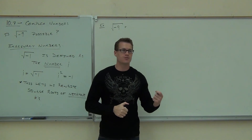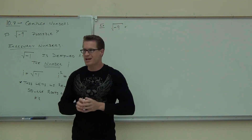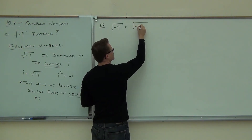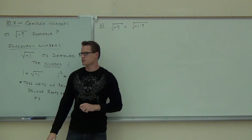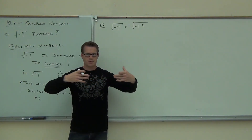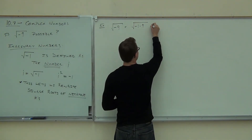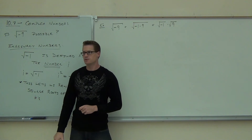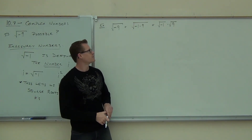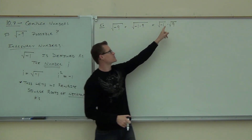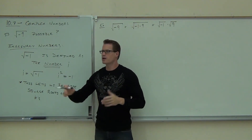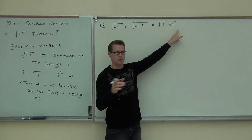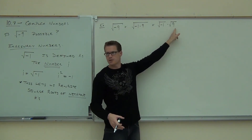Here's what you need to do whenever you get the square root of a negative number: we're trying to break off a negative 1. The square root of negative 9 is the same thing as the square root of negative 1 times 9. According to the product rule, we can separate those. As soon as we break off the negative 1, this changes into a square root we can deal with. The square root of 9 is 3.